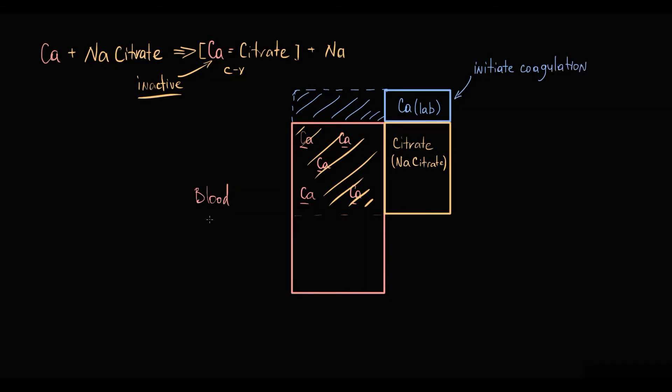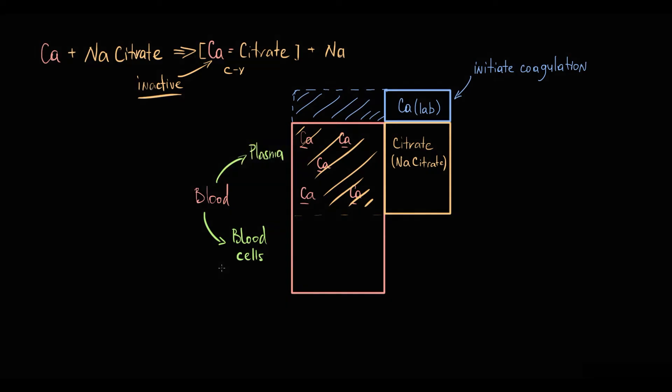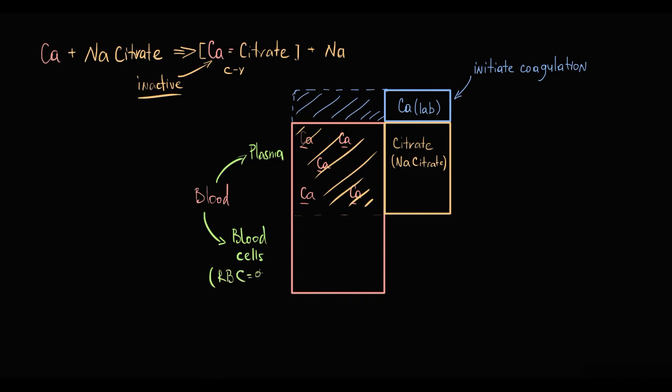But recall that blood is composed of blood cells and plasma, which is the liquid component of blood. The most abundant blood cells are by far erythrocytes—99% of whole blood cells are erythrocytes. Plasma contains fluid, proteins, and ions including calcium. Now we have to understand that when we add citrate to blood, it acts only in the plasma compartment.